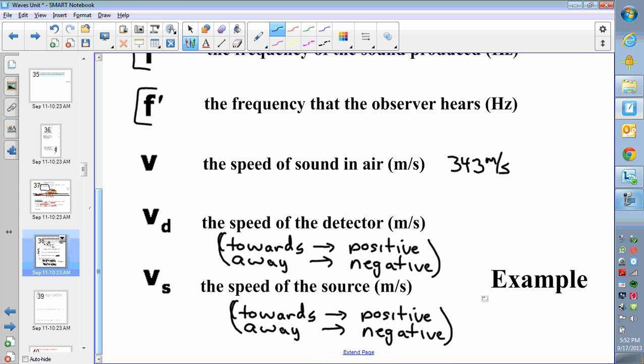The VS and the VD are going to, the S and the D are going to stand for the detector and the source. So, the detector's speed is VD. That's the person who is hearing. The source's speed, VS, is the one that's making the sound. The only rule we have when we're going to go plug these into the formula is that if the detector is moving towards the source, we're going to put a positive number into our formula, and if they're moving away, you're going to make that speed a negative when we plug it in the formula. And the same is true for the source. If the source moves towards the detector, it's positive, and away from the detector, it is negative.